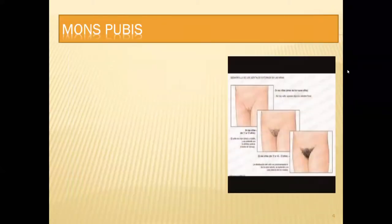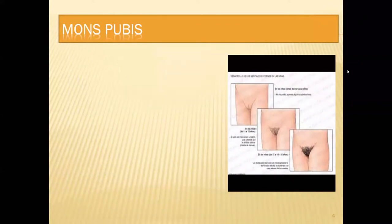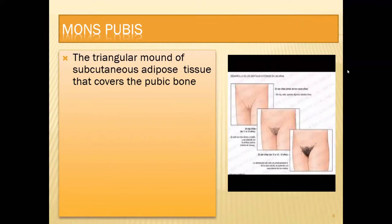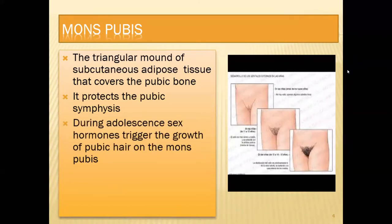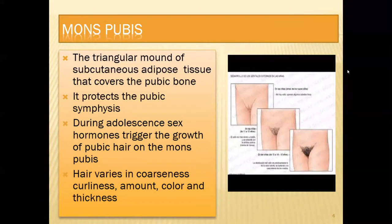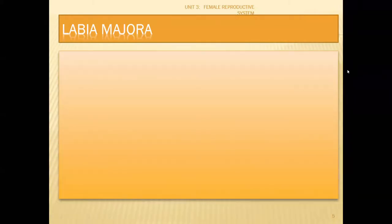The first part of the external genitalia is the mons pubis. It is a triangular mound of subcutaneous adipose tissue that covers the pubic bone. Its function is to protect the pubic symphysis. In adolescence, sex hormones trigger the growth of pubic hair in the mons pubis. The hair varies in coarseness, curliness, amount, color, and thickness. The mons pubis is covered by coarse hair.